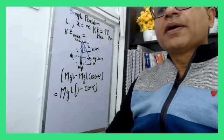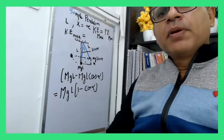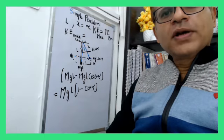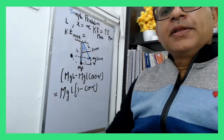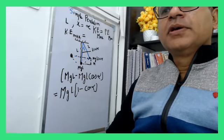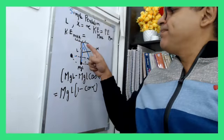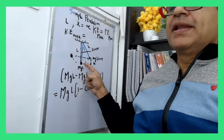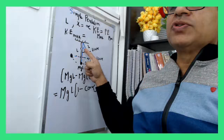Good evening. This numerical is on simple harmonic motion and the focus is to find the maximum kinetic energy. What is given is that this is a pendulum which oscillates by an angle alpha.